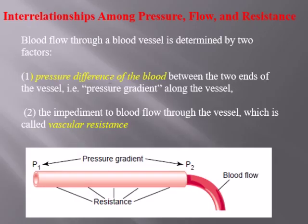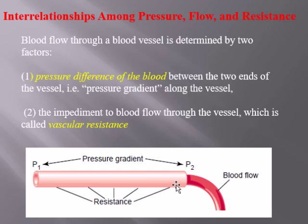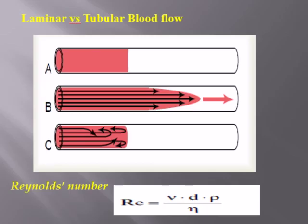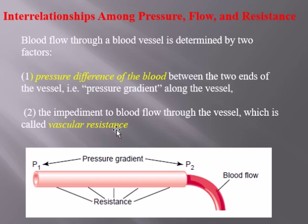The pressure difference of the blood between the two ends of a vessel is known as the pressure gradient. On the arterial end, the pressure is higher; on the venous end, the pressure is lower. The difference between these two pressures is the pressure gradient. The vessel itself offers resistance, which is the impediment to blood flow.